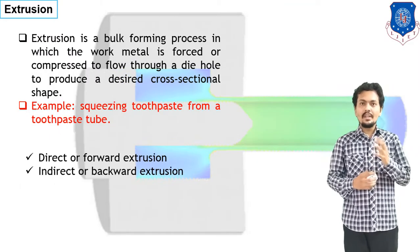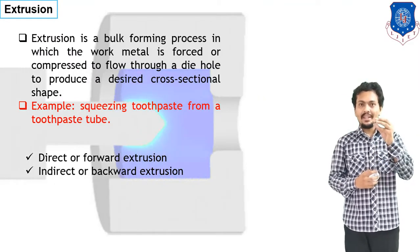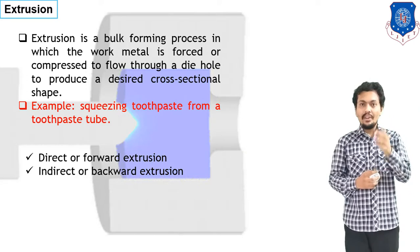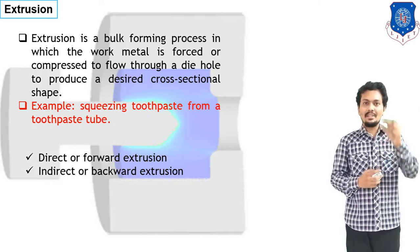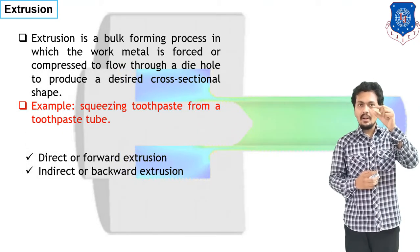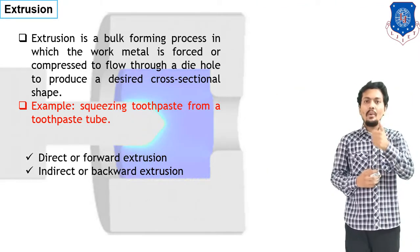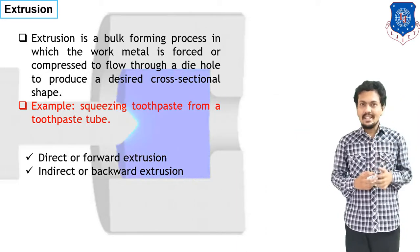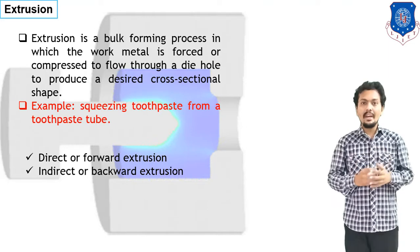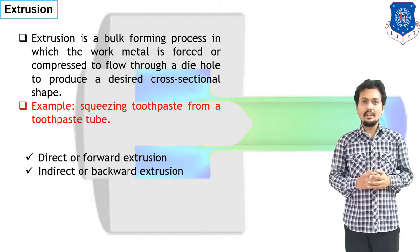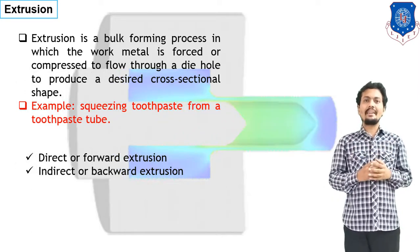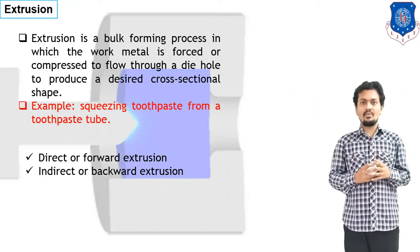Extrusion is a process in which your material comes out from the die. With application of force, you can reshape your metal as it flows through the small diameter opening known as a die. Here I have mentioned two types of extrusion — that is direct extrusion and indirect extrusion.